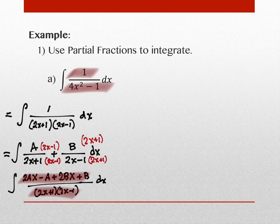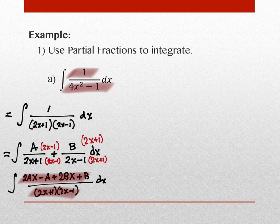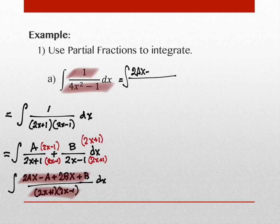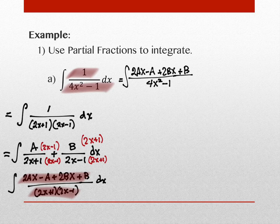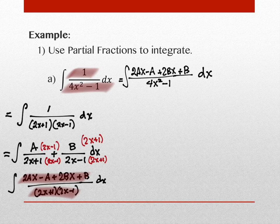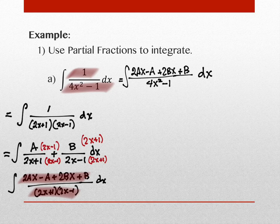I want to look at the pieces of that numerator. There are variable terms and constant terms. The ones with x in them are the variables; the ones without x are the constants. So: 2Ax − A + 2Bx + B is supposed to equal the original numerator. The terms with x: 2A and 2B. The terms without x: −A and +B.